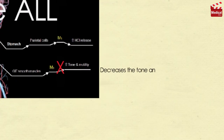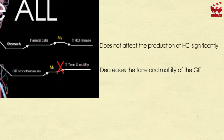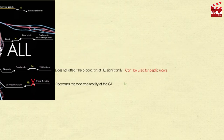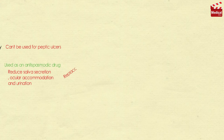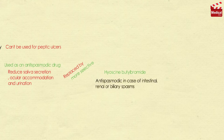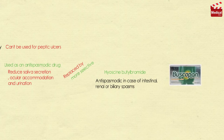Atropine decreases the tone and motility of the GI tract but does not significantly affect hydrochloric acid production, so it cannot be used for peptic ulcers. It can be used as an antispasmodic drug, but it is not the best choice because the dose used to treat spasms also reduces saliva secretion, ocular accommodation, and urination. It has been replaced by the more selective agent hyoscine butylbromide, used as an antispasmodic in intestinal, renal, or biliary spasms, available under the brand name Buscopan in tablets and injection.